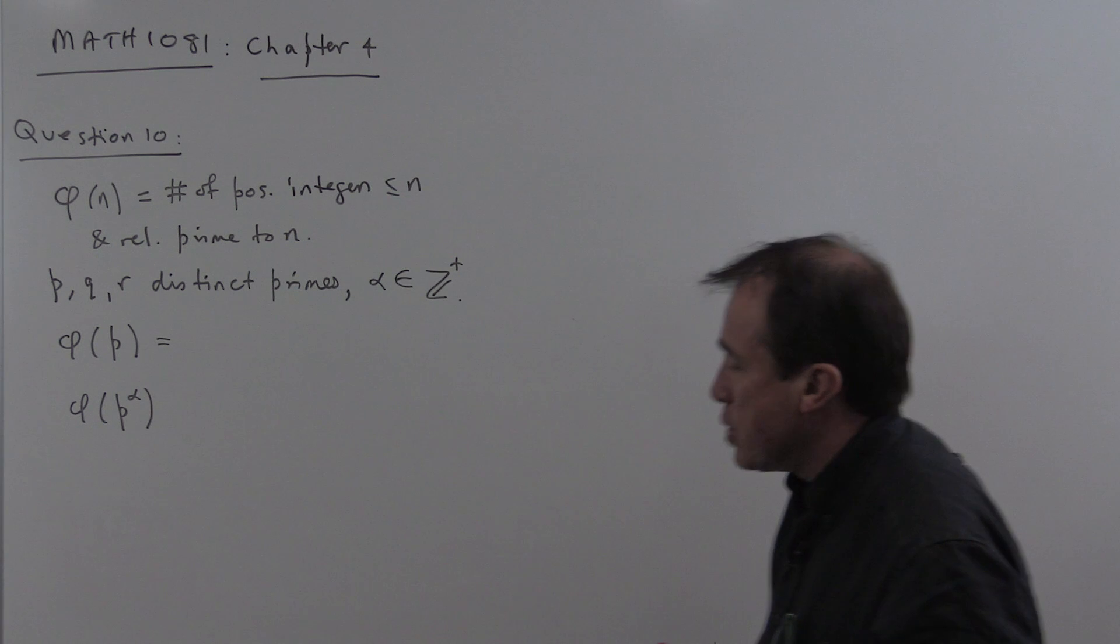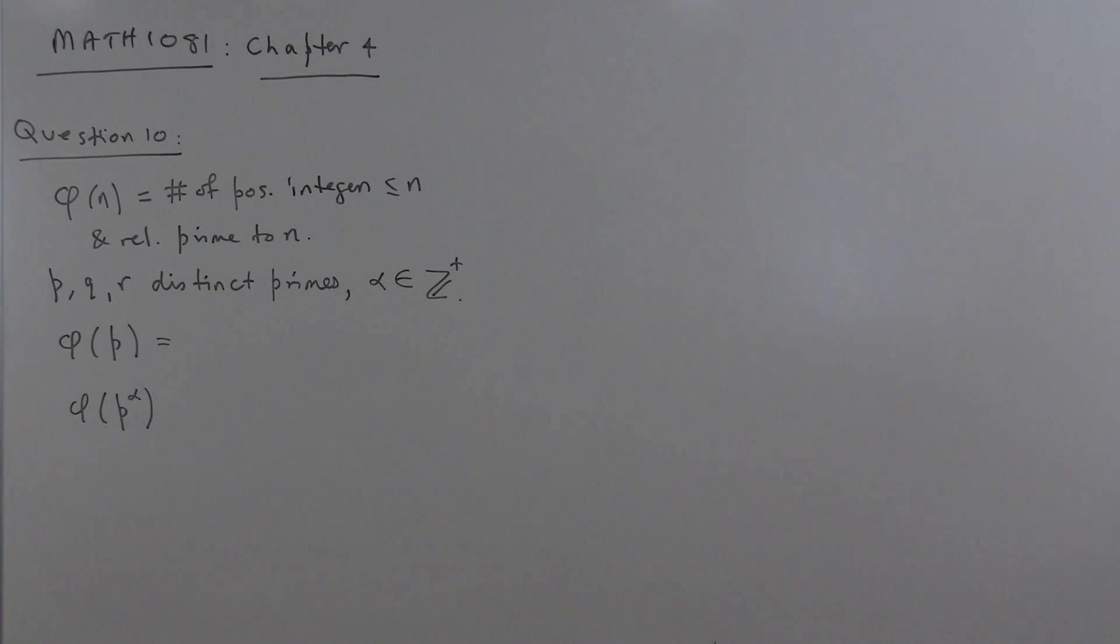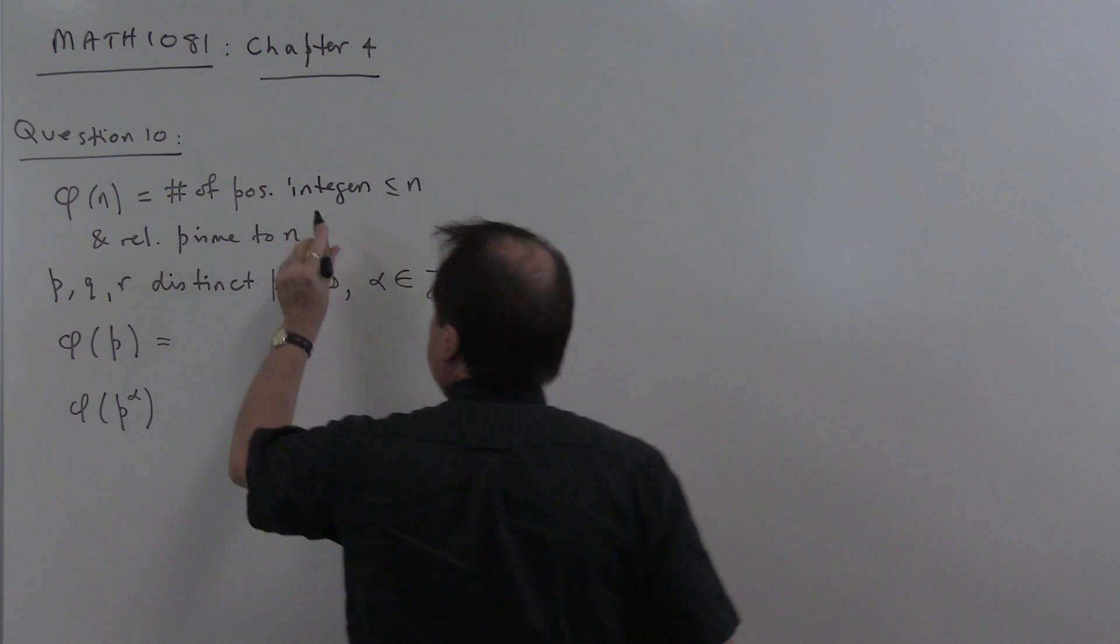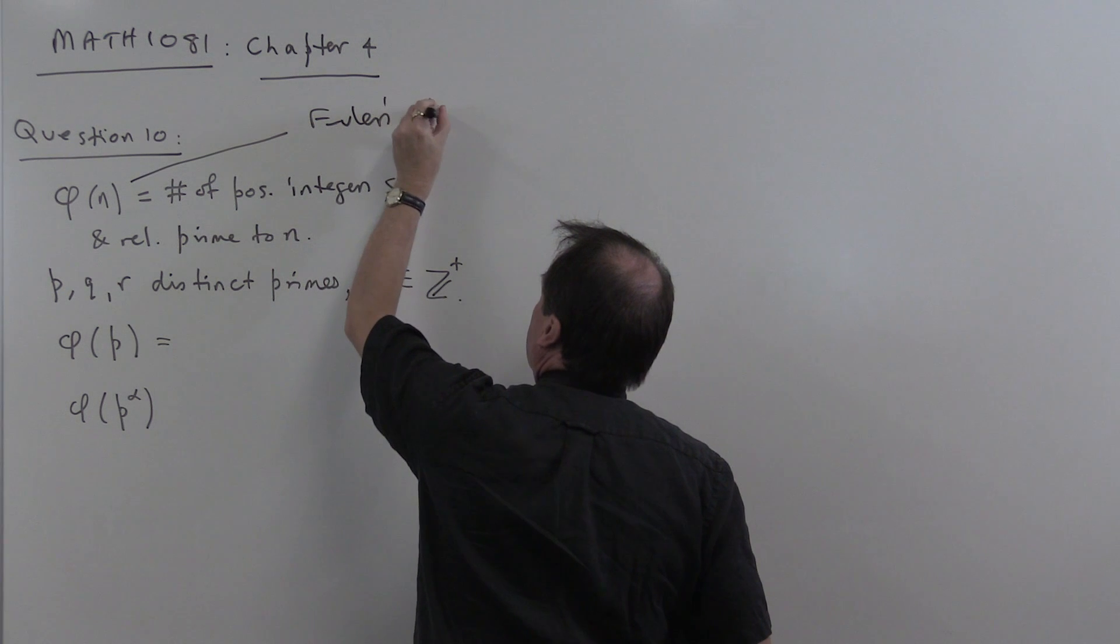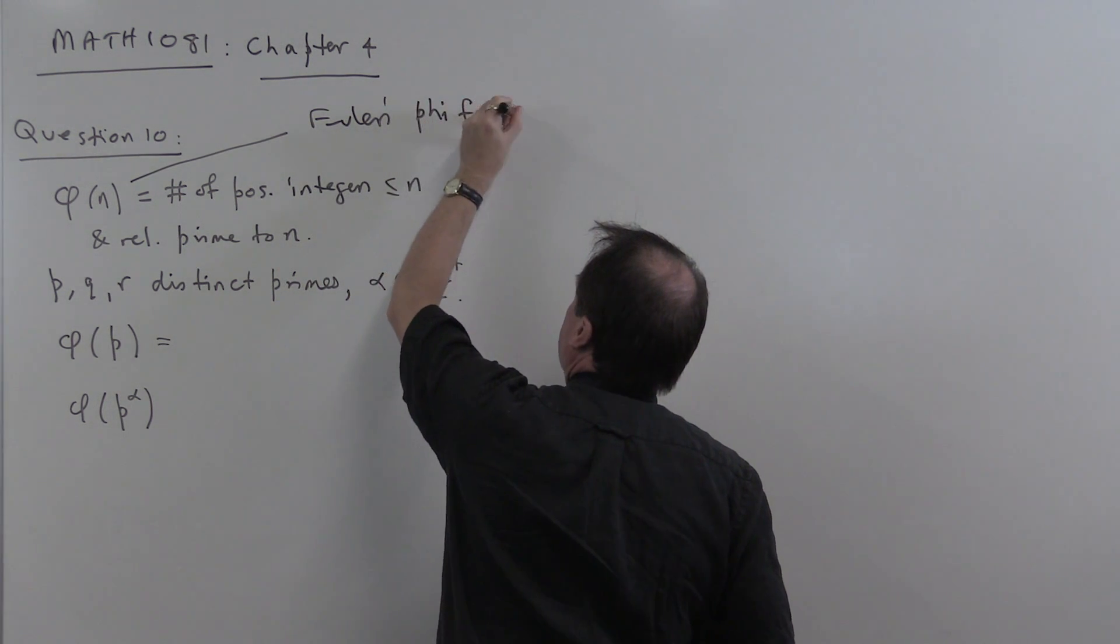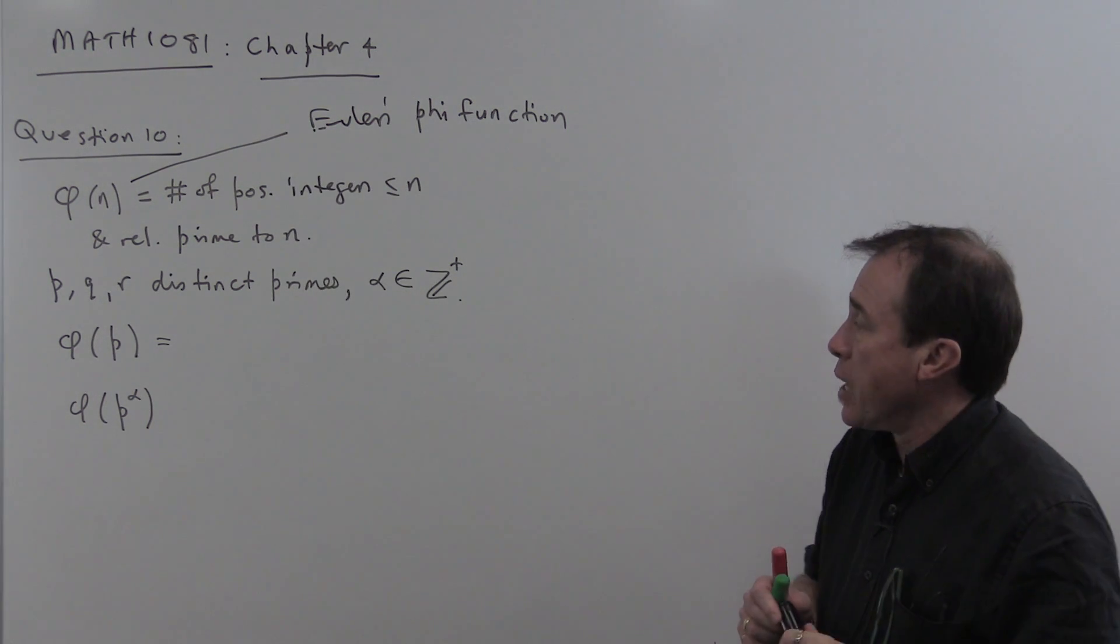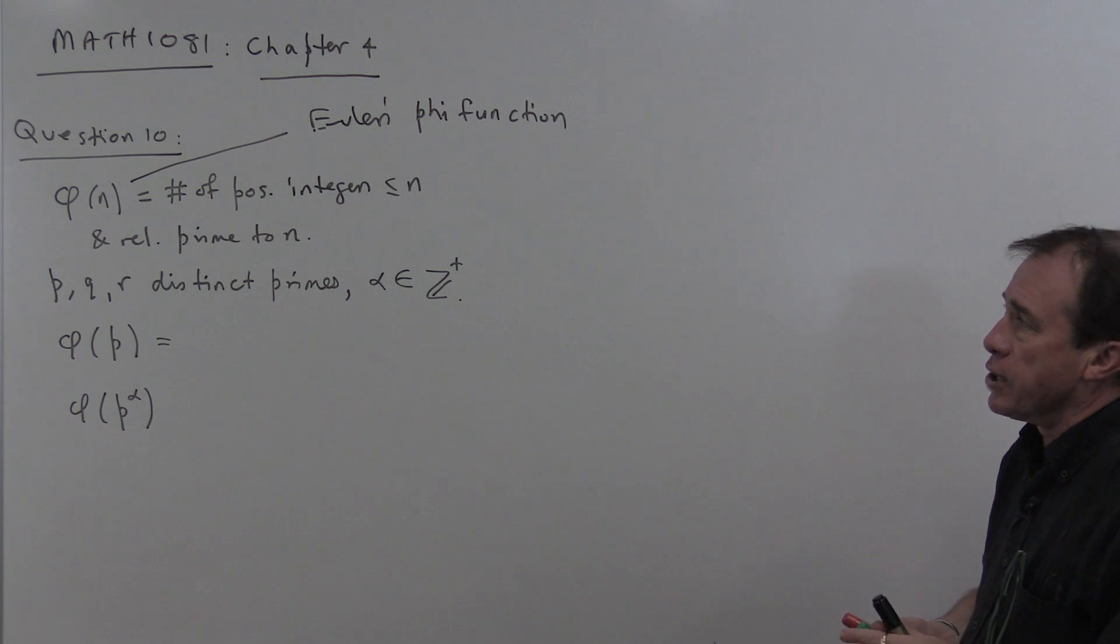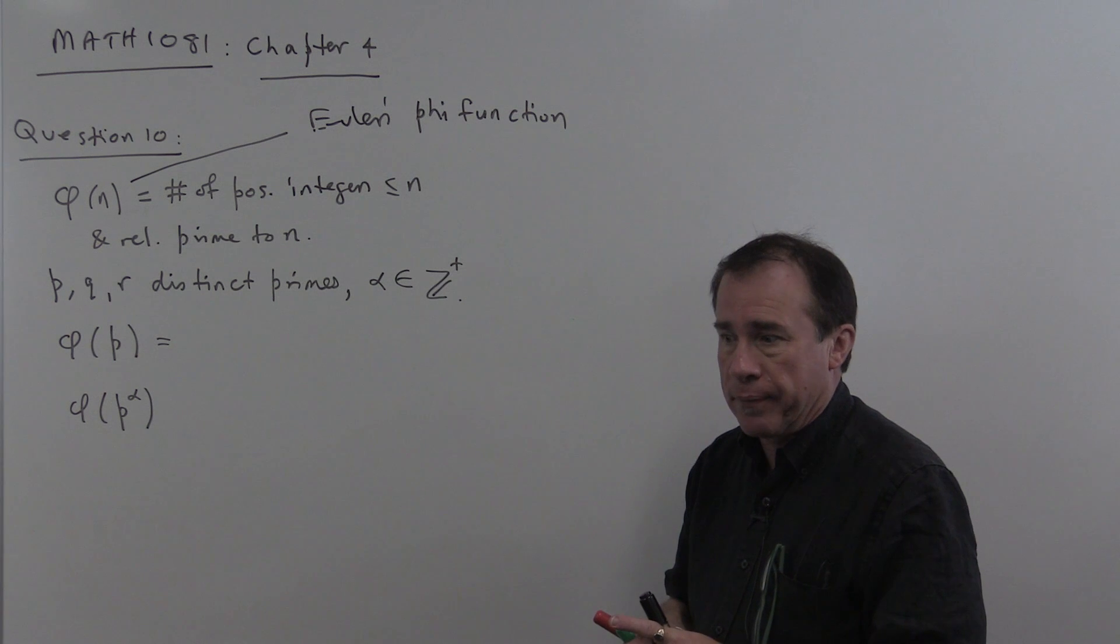The first one is question 10, which is a nice interesting question to do with prime numbers and an interesting function called Euler's phi function. You can Google this function if you want to get some more information on it. It's a very important function in number theory. What it does is it counts the number of positive integers less or equal to a given number n and relatively prime to n.